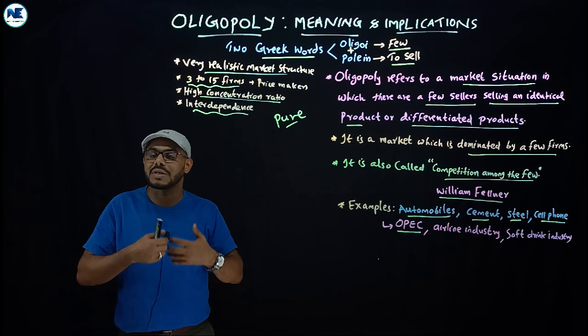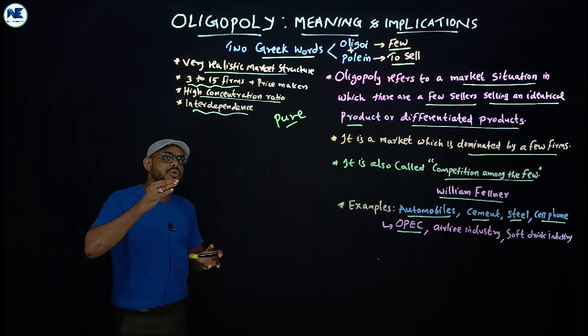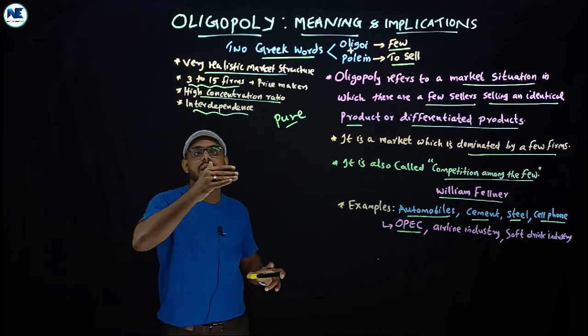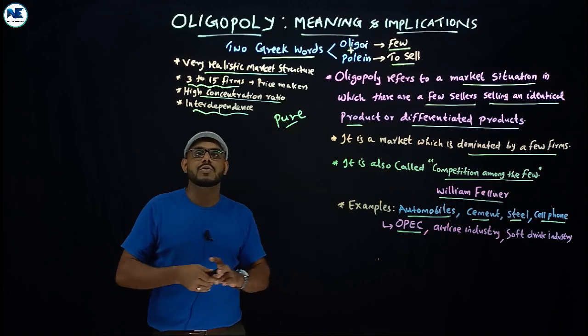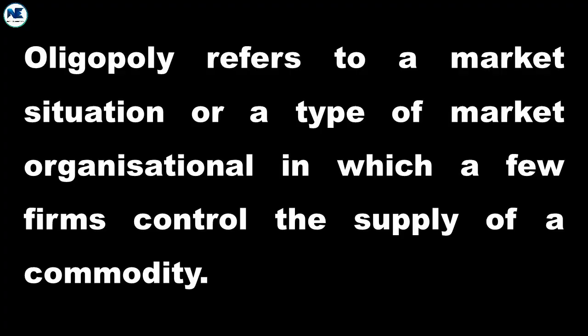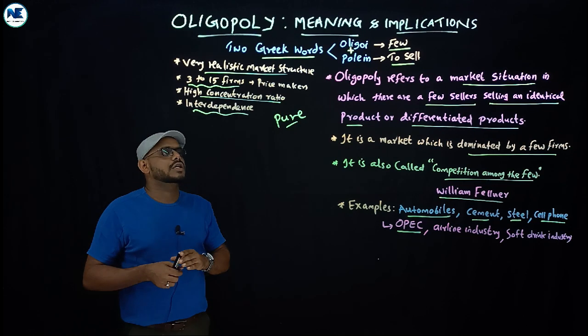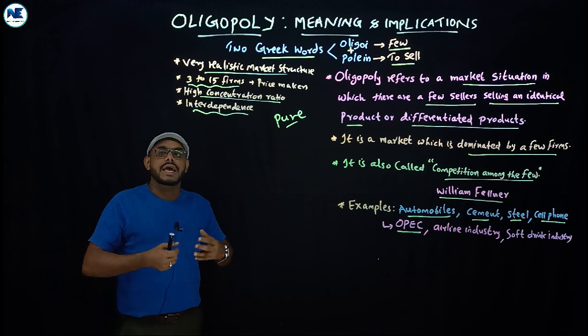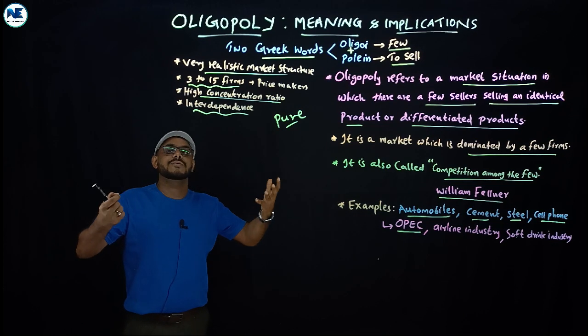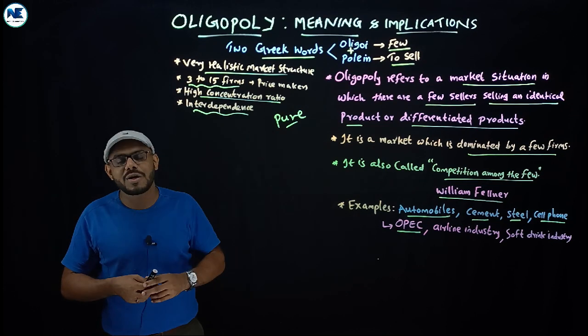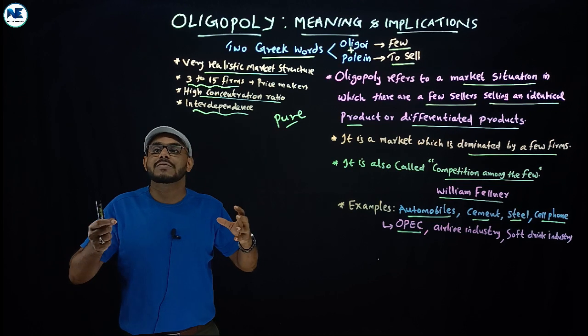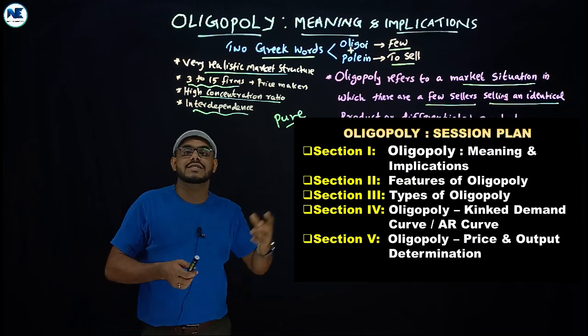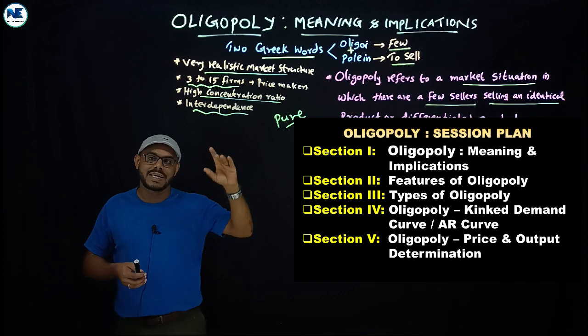Simply we can say under this market, which is controlled by a few large firms, we can see mutual interdependence. In the coming video we will discuss the important features or key characteristics of oligopoly. Thank you.